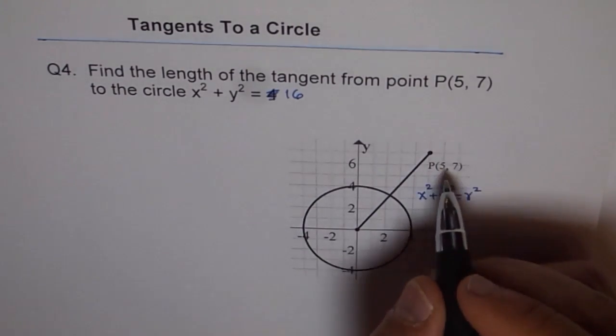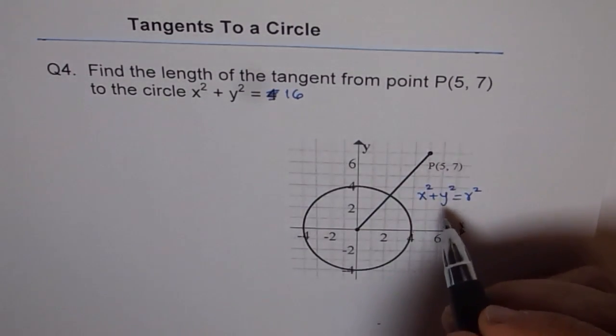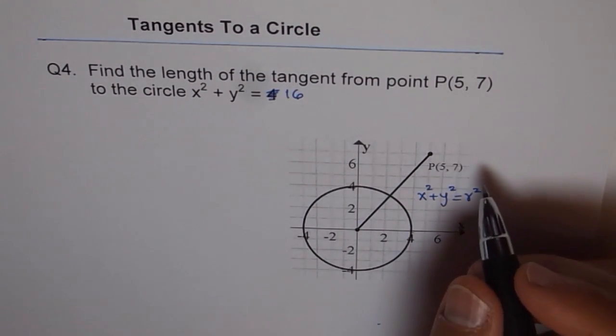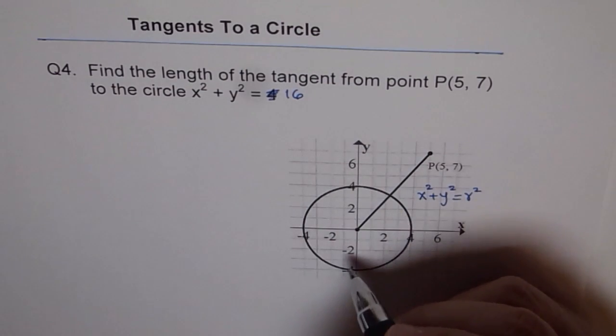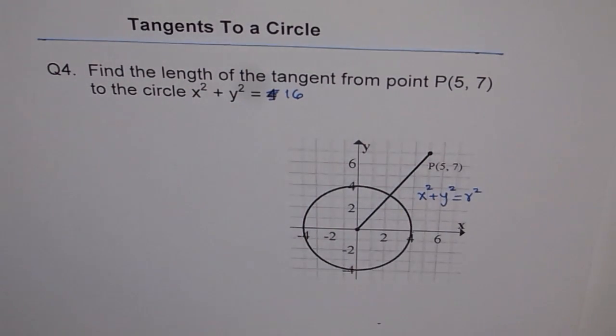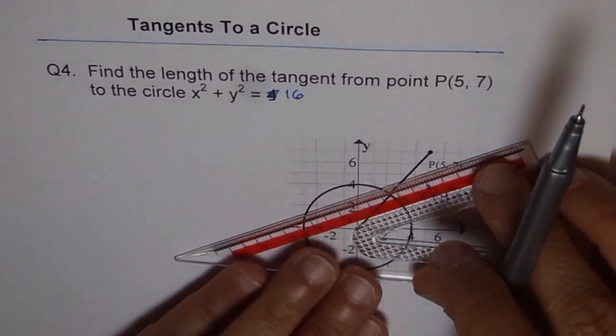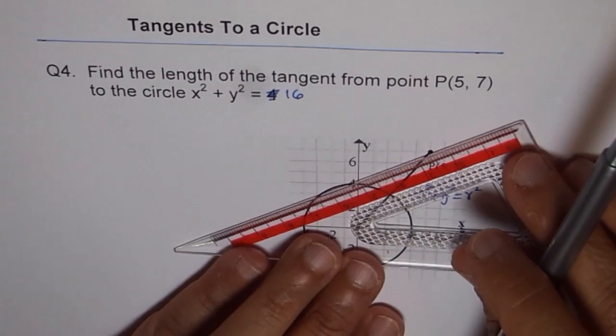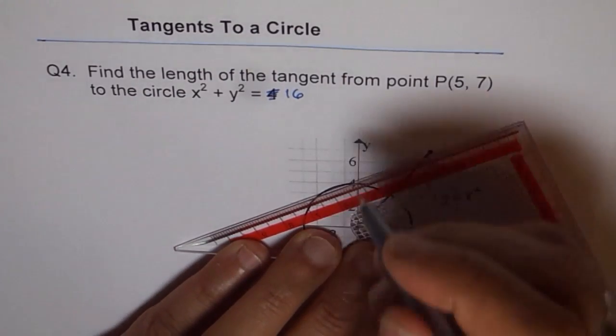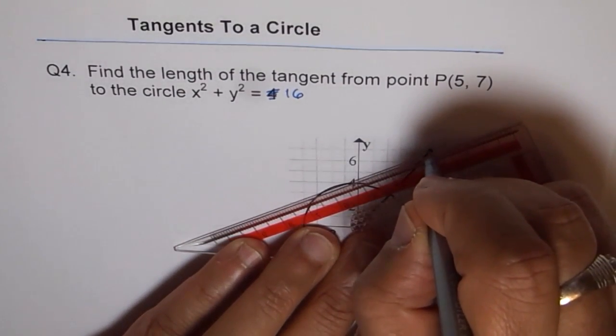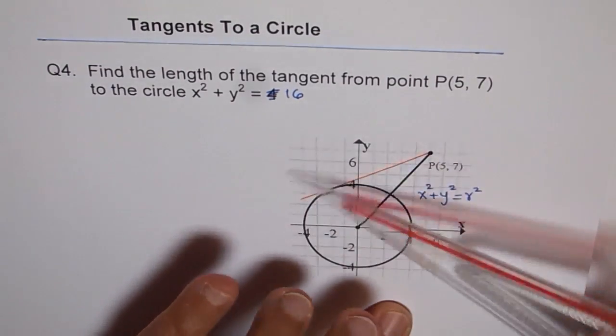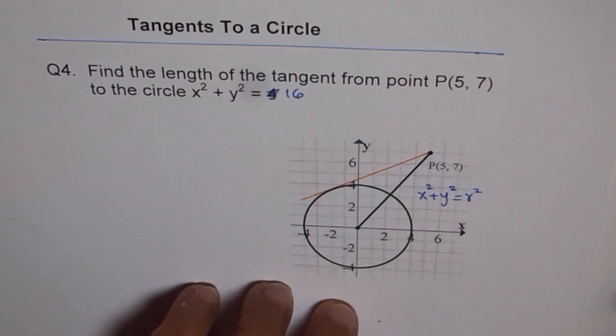Now the given point P to us is (5, 7). To find the length of the tangent, we can first draw a tangent from this point and then find the length. So we'll draw a line which touches the circle at one point. Let's say this one. So it looks like a good enough tangent.